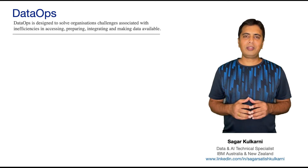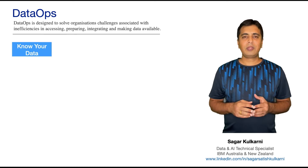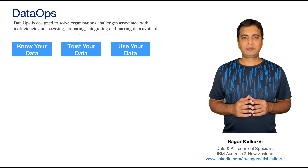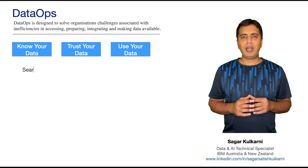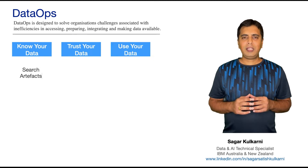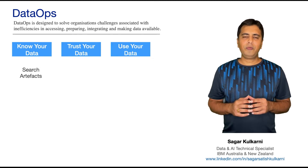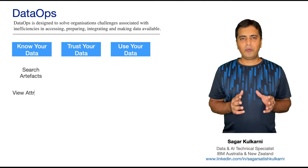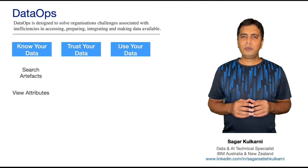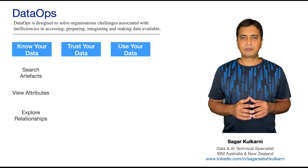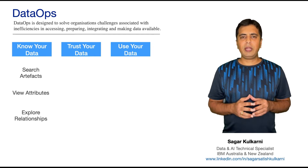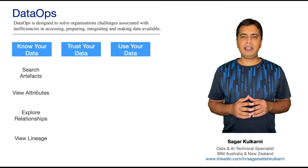DataOps has got three objectives: Know your data, trust your data and use your data. Know your data is about ensuring users can search relevant artifacts. Once they have found a relevant artifact, they should be able to view all the attributes related to that artifact. Users should be able to explore relationships with other assets in their organization. They should be able to understand how the artifact has been created and how it has been used in downstream applications using an end-to-end lineage.